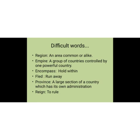Next you have empire — a group of countries controlled by one powerful country. Next you have encompass, which means to hold within. Then province, which in Hindi is called 'prant.' It means a large section of a country which has its own administration.